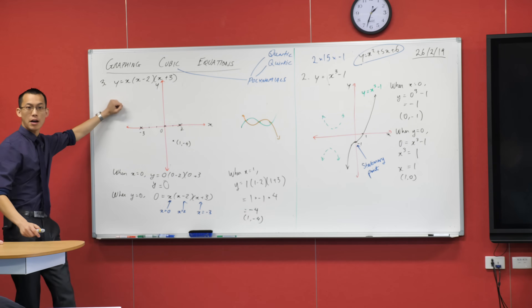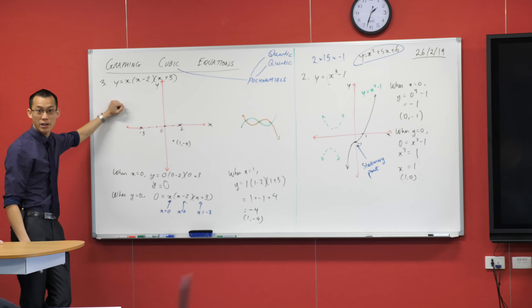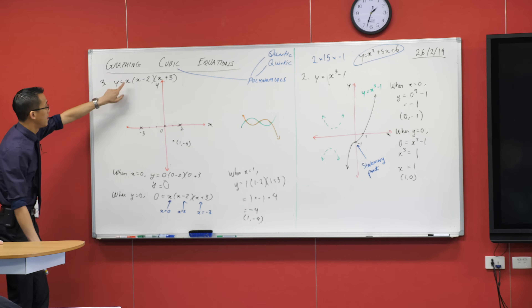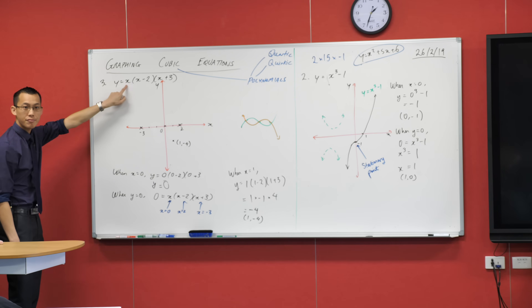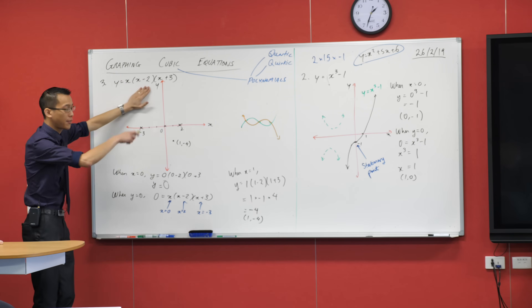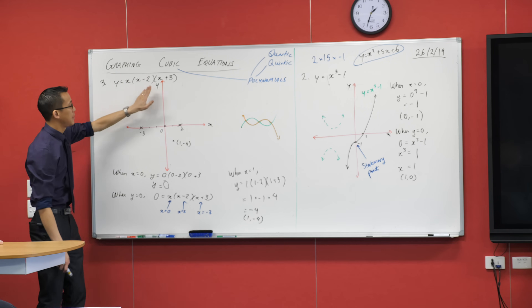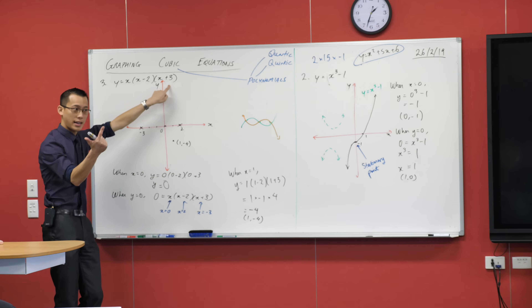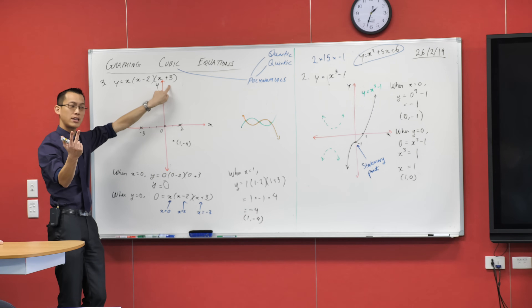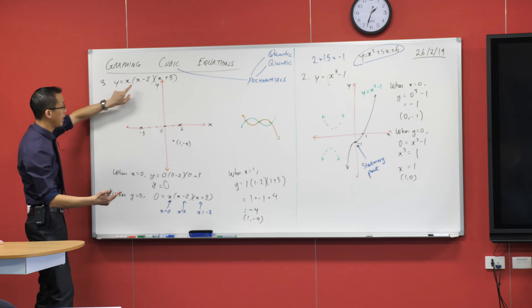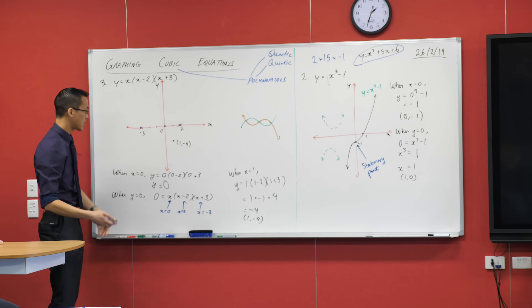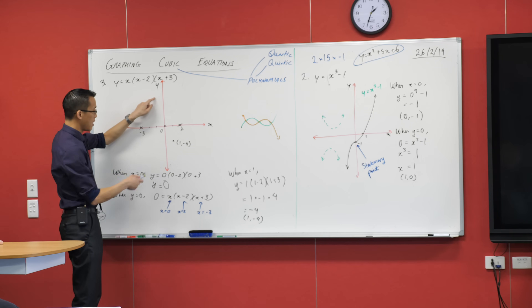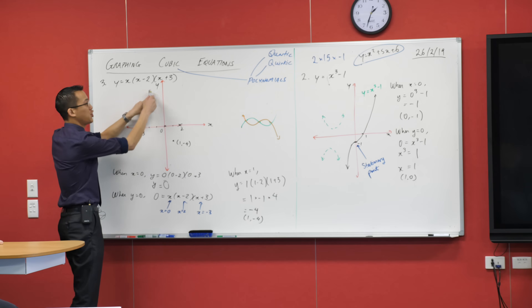Can someone suggest another point that might be useful? Negative one? You want to try negative one? So if I put it in — this will become negative one. What will this object become? X minus two — that's negative three. Negative one times negative three times two. The two negatives will cancel, so I'm really doing one times three. That's six, isn't it? Negative one, six.